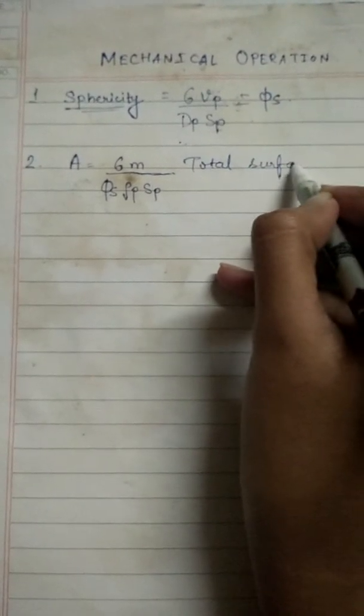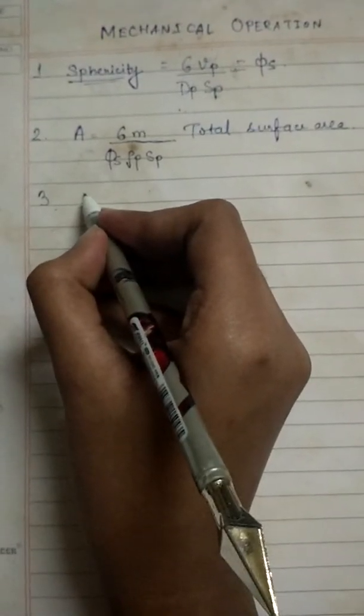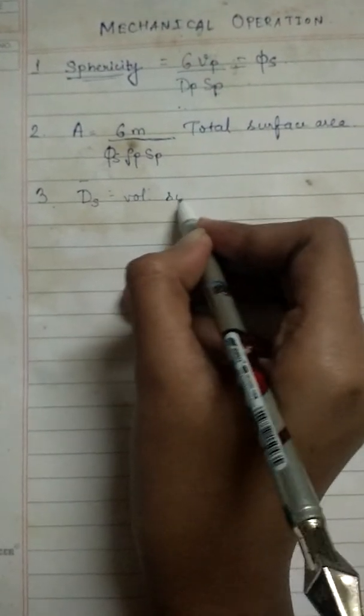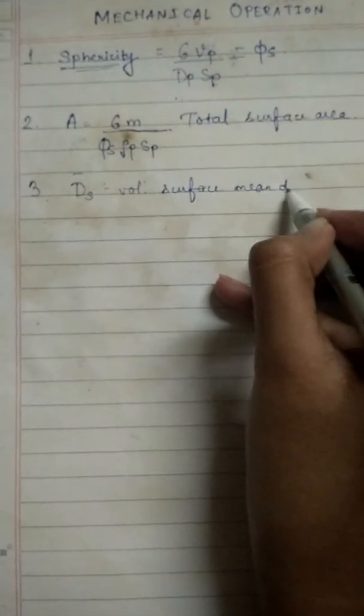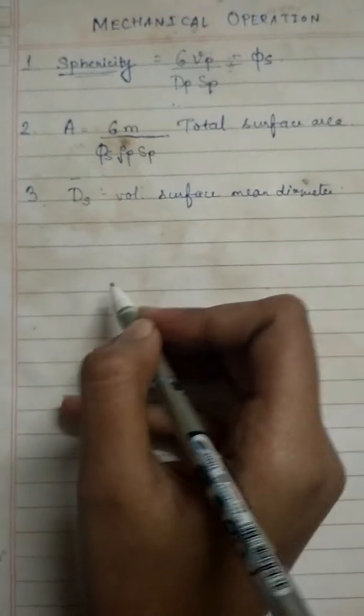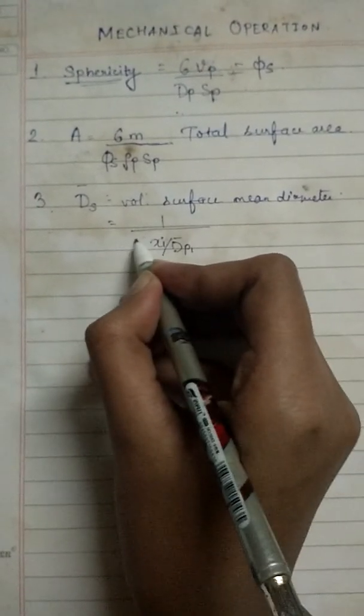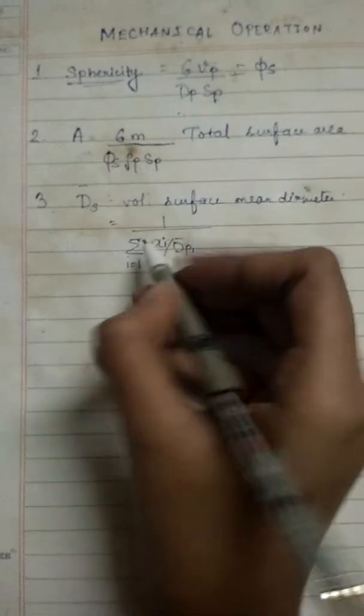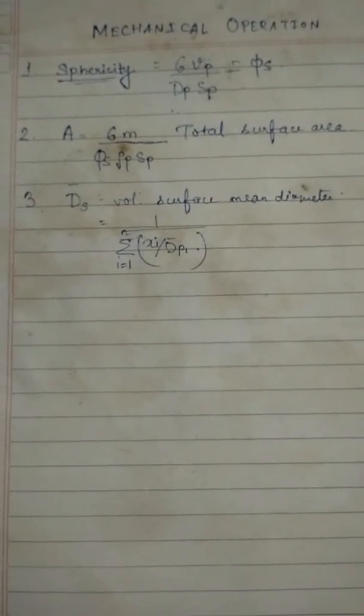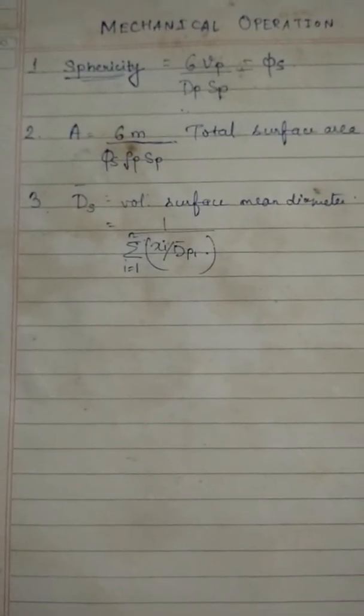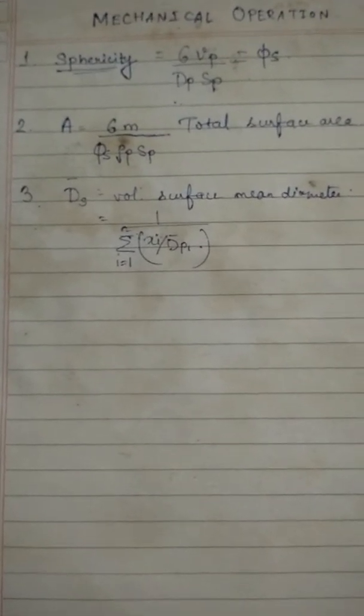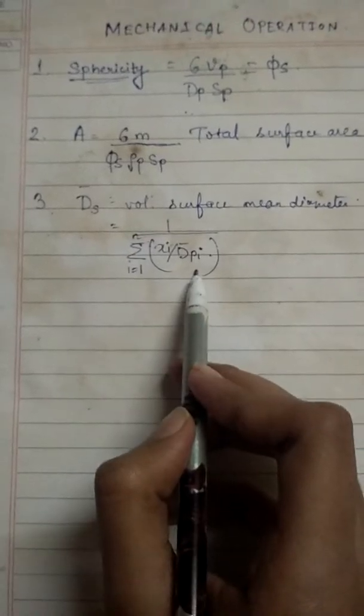The next thing that you deal with is volume surface mean diameter. Volume surface mean diameter is denoted by ds. The formula of this is given by 1 by summation xi by dpi, where i is from 1 to n. Here xi is the mass fraction of the particle of ith nature and dpi is denoting the diameter of that particle, the equivalent diameter. So this formula gives you the volume surface mean diameter.